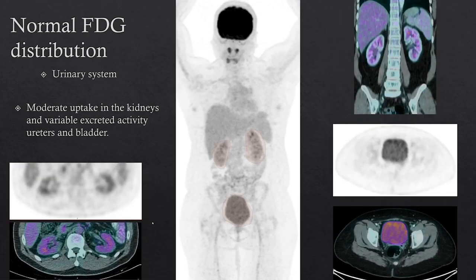In the urinary system, you'd see moderate activity in the kidneys. FDG is excreted through the kidneys, so you'd see variable activity in the ureters and the bladder. If the patient is well hydrated and voiding well, you won't really see any activity in the region of the ureters. But you can see quite prominent activity in the bladder and the ureters if there's a lot of retained tracer.